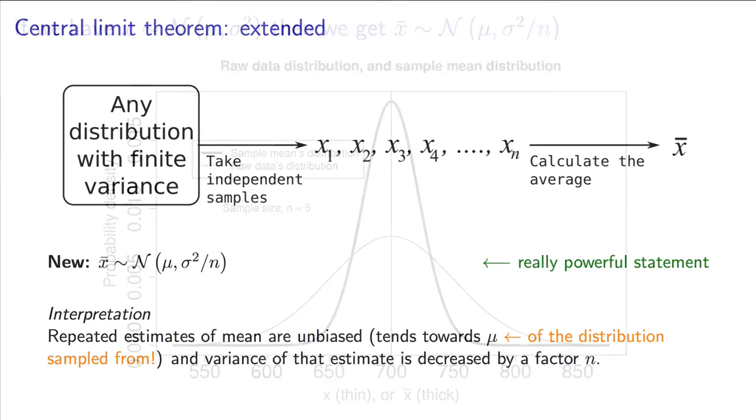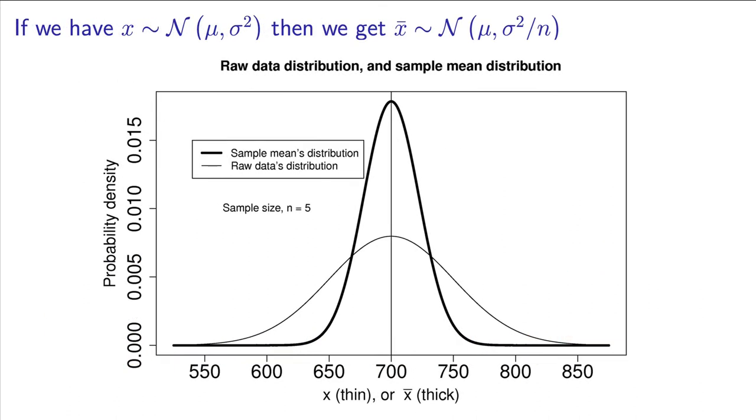Practically speaking, that meant that if our original data came from the broad histogram shown here, then the distribution of the average comes from this much narrower distribution. The interpretation is that if we take many samples and average them, we get a better estimate of the mean, with less error.